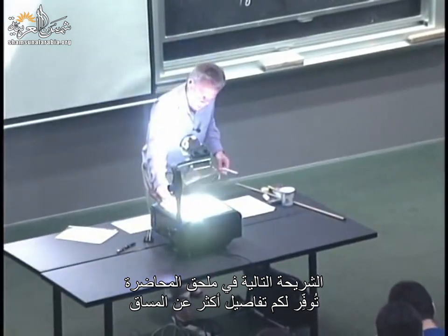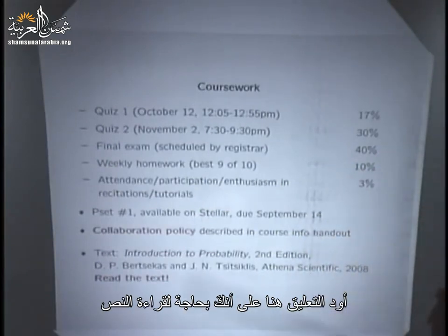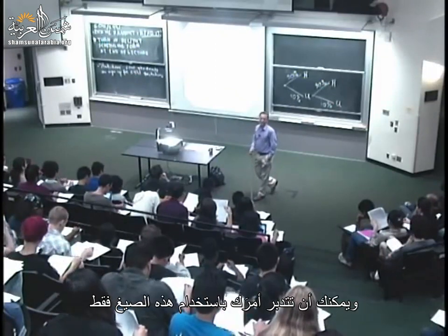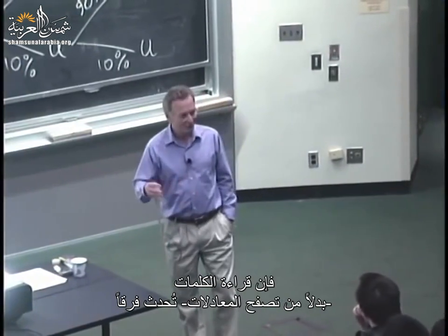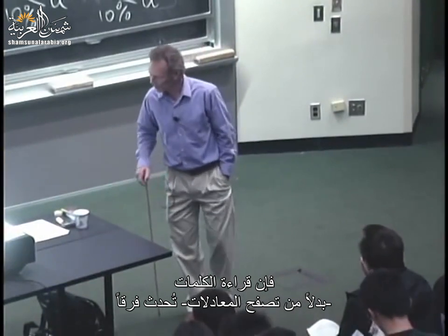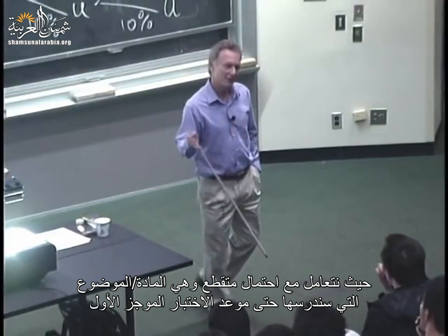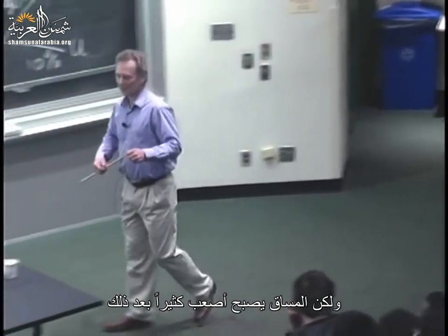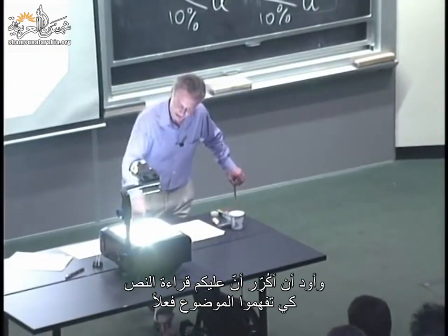The next slide gives you more details about the class. One thing to comment: you do need to read the text. With calculus books, perhaps you can live with just a two-page summary of formulas. But here, because we want to develop concepts and intuition, actually reading words — as opposed to just browsing through equations — does make a difference. In the beginning, the class is kind of easy when we deal with discrete probability, which is material until our first quiz. But it gets substantially harder afterwards, and you have to read the text to really understand the material.